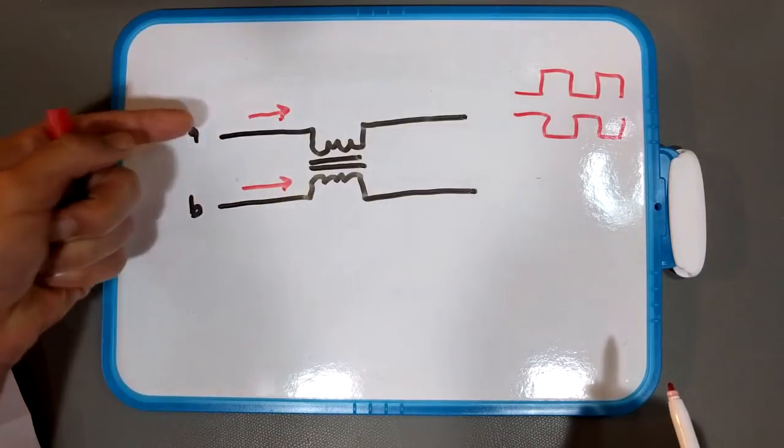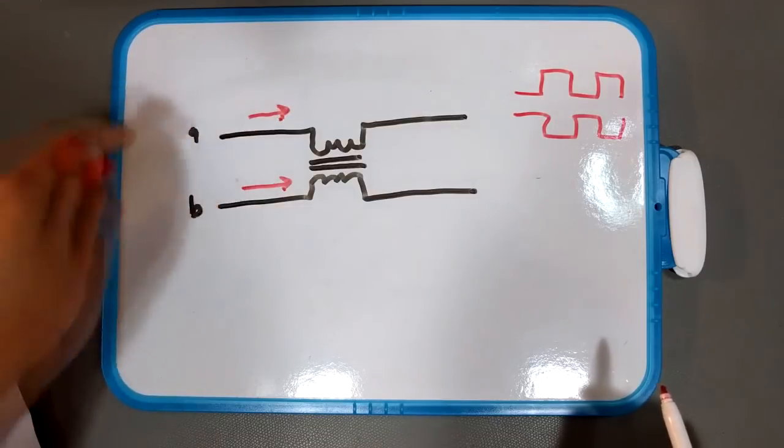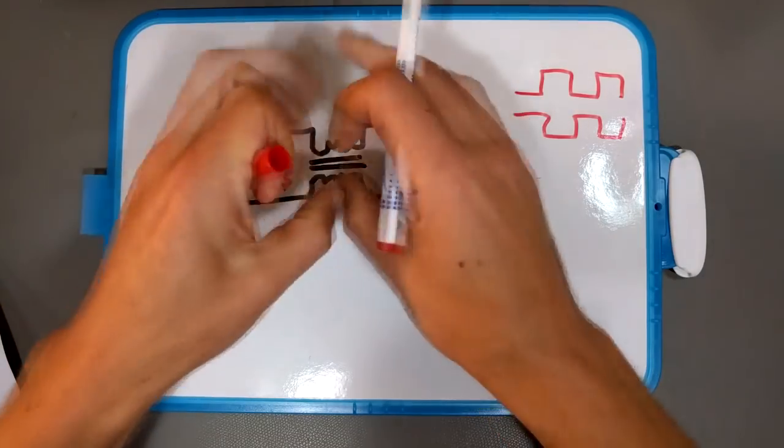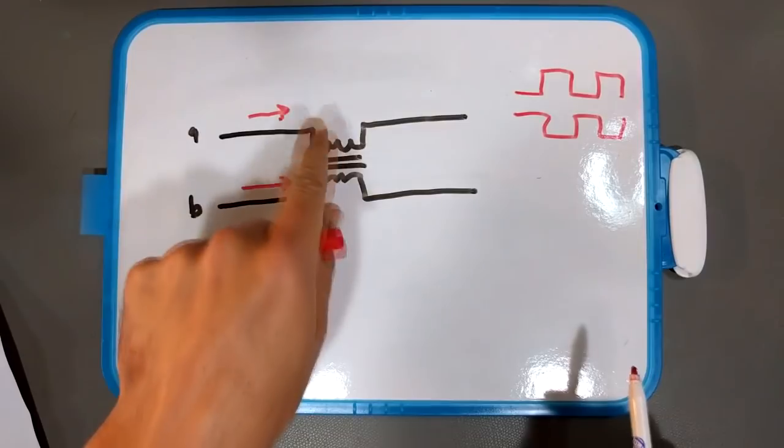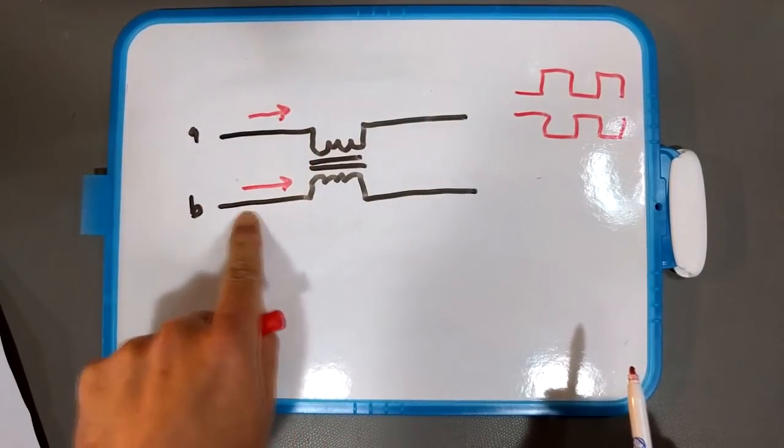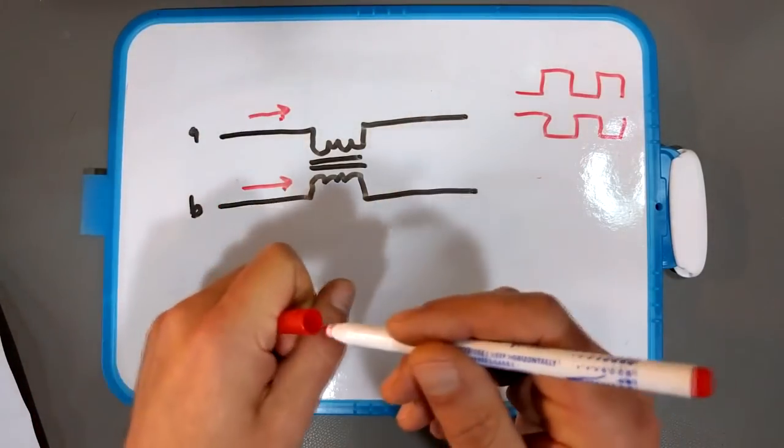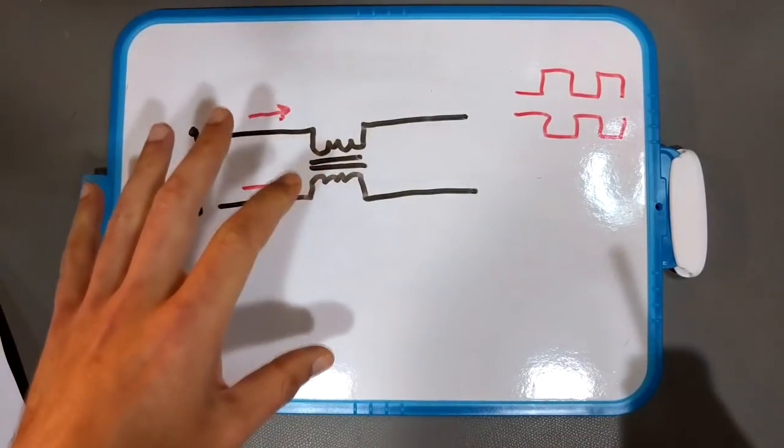And when that happens the current in signal A in the little wire for signal A creates his expanding and collapsing magnetic field but the same current going in the same direction in line B is creating again an identical expanding and collapsing magnetic field. Those add together.